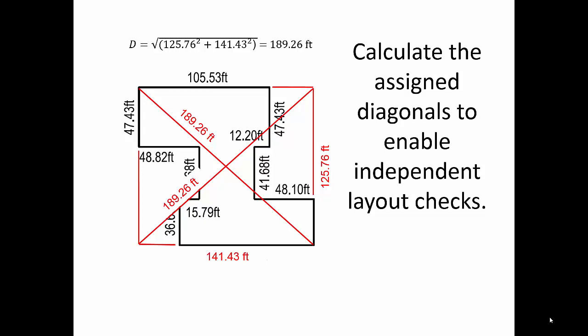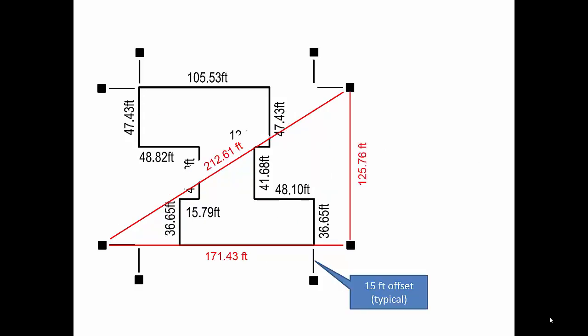once the hole has been excavated for the foundation, those corners no longer exist and our contractor is reliant upon our offset stakes. So therefore, we need to check diagonals between our offset stakes, don't we? Okay, so here I'm giving you a typical scenario in the blue box. You can see we've said that our offset, that is the distance from the building corner to our stakes, is set to be 15 feet typical for this project.